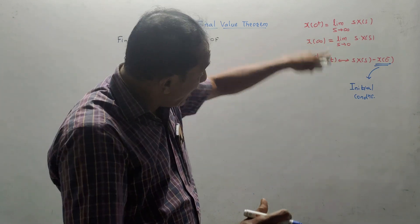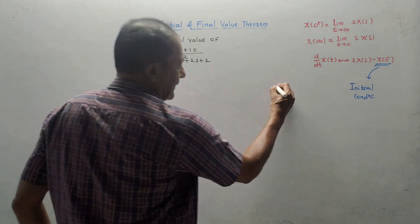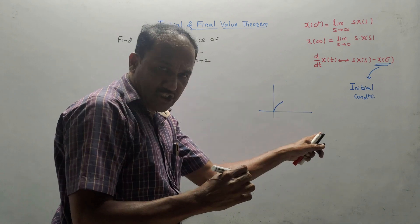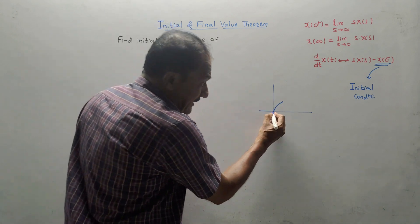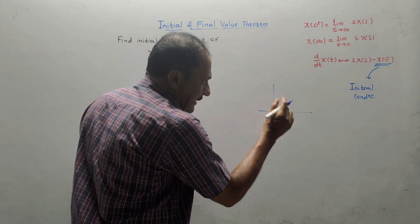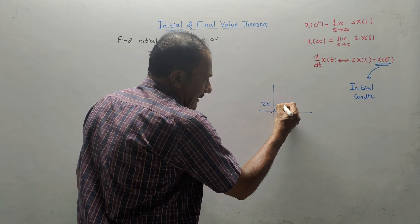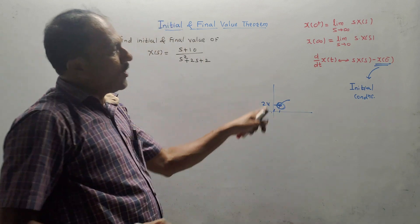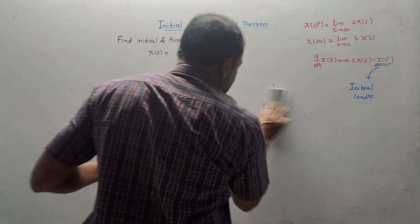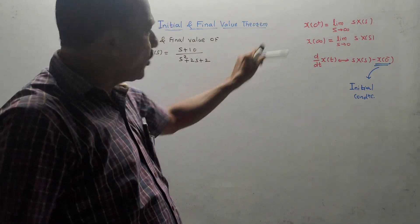But initial value means x(0⁺). What is initial condition? If we have a capacitor, we ideally think the capacitor will start charging from 0 and discharge back to 0. But if the capacitor has not started charging from 0 — if it started from some other value, say 2 volts — then that value is called the initial condition of the capacitor. Initial value is the starting value of any sequence, and the ending value at infinity is called the final value.